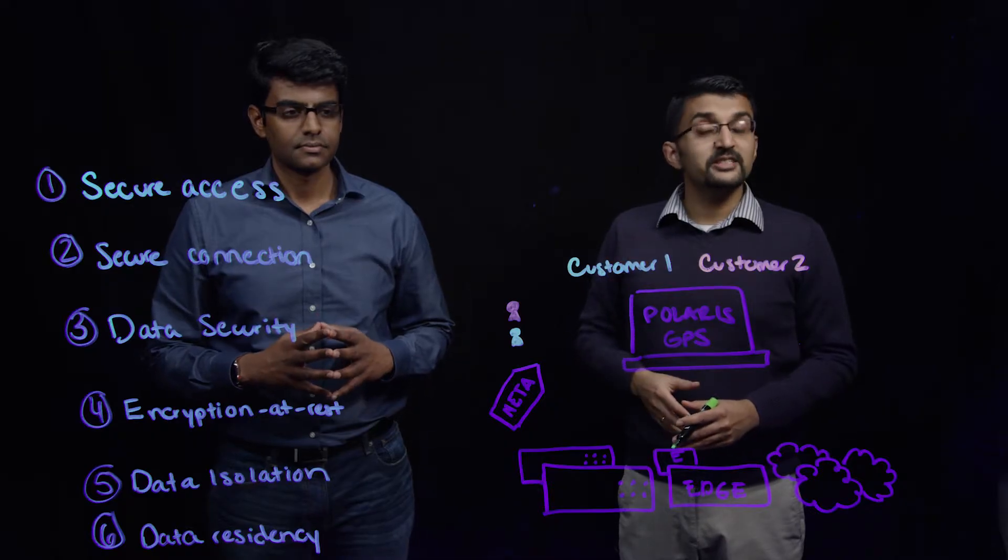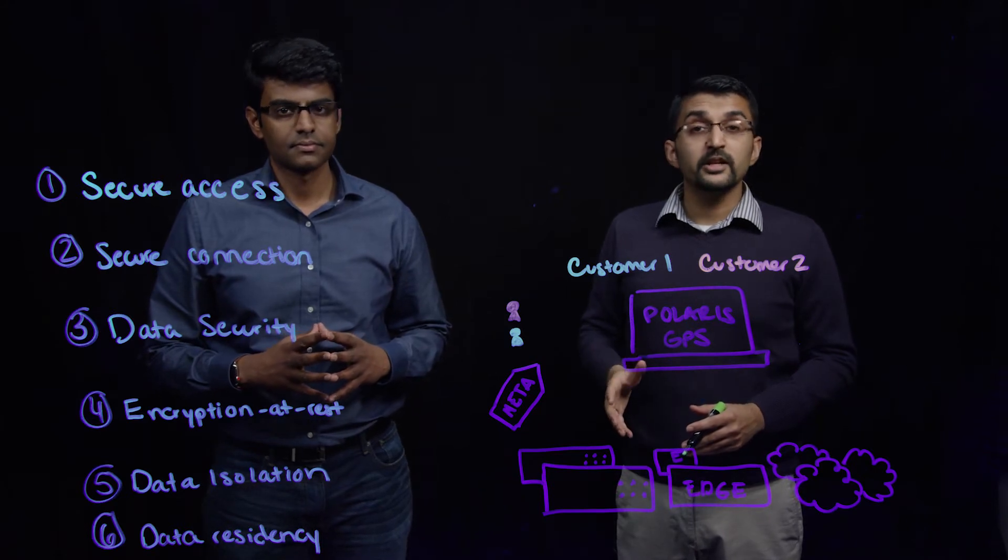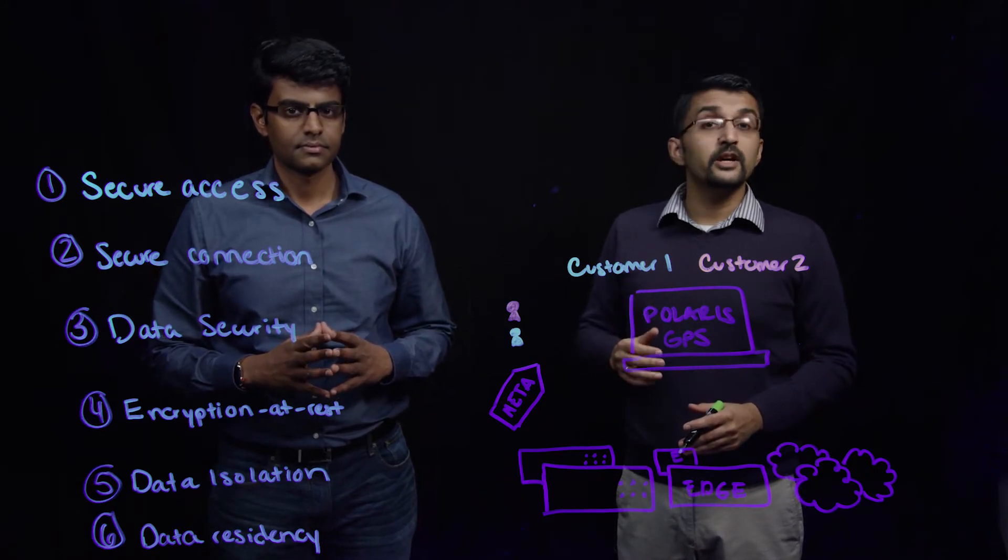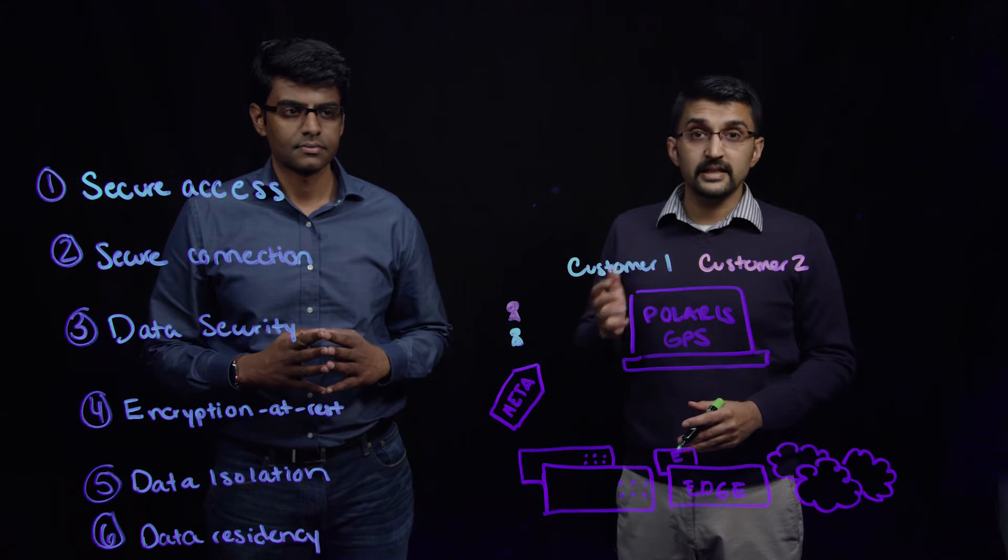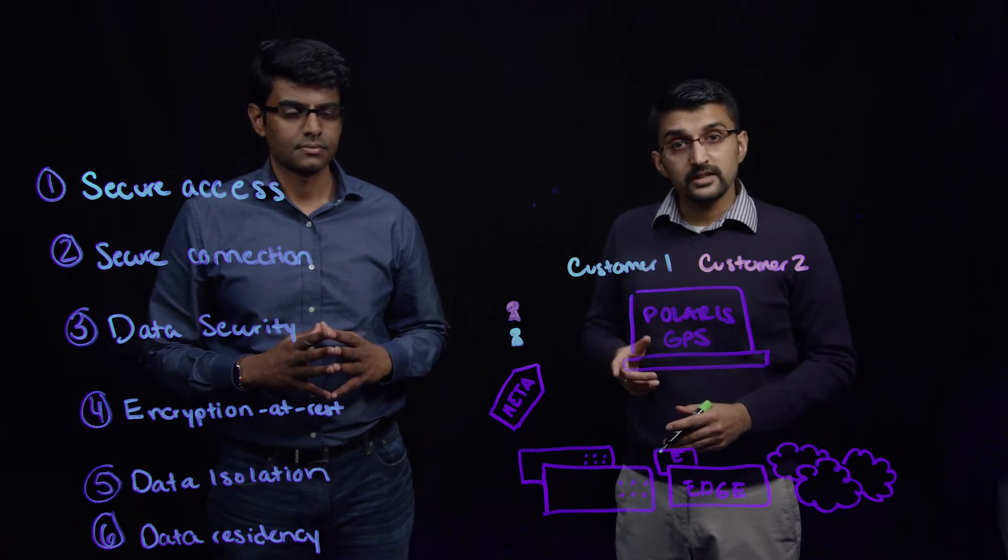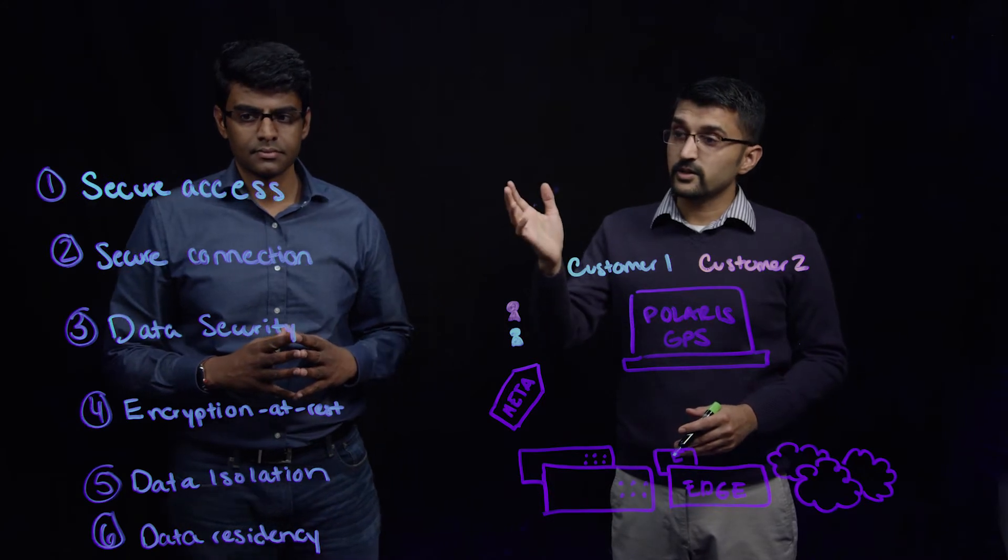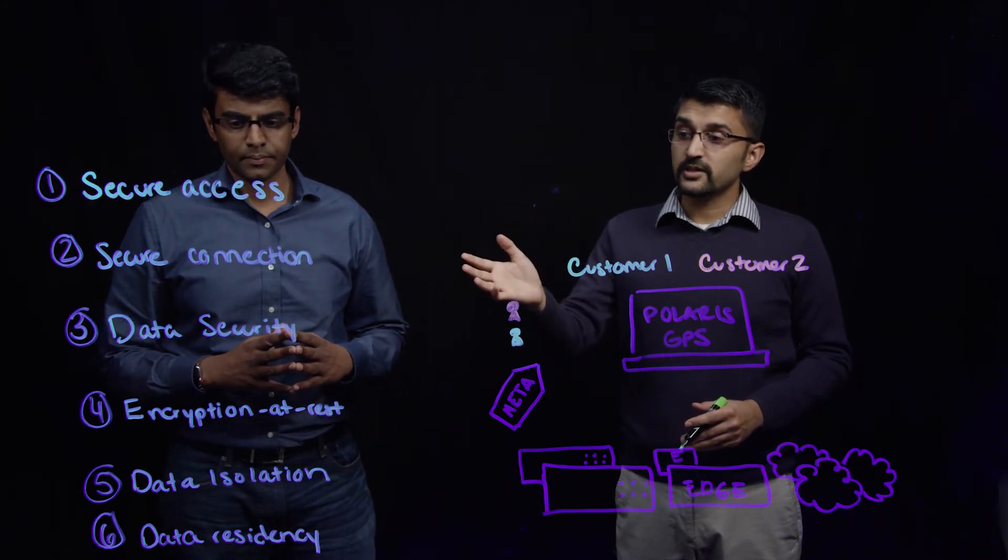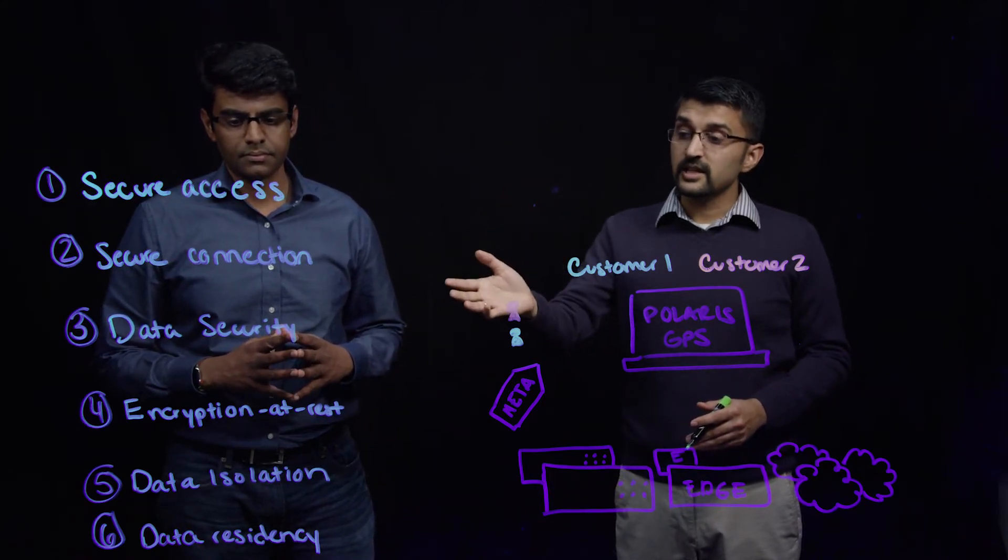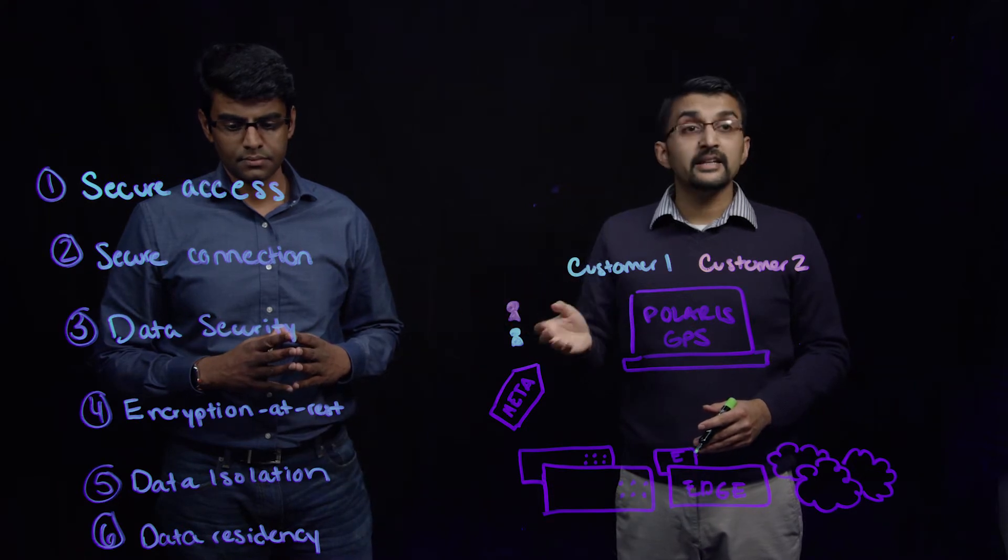Polaris GPS takes a multi-layered approach to security to ensure the privacy and safety of our customers' applications and data. This comprehensive security strategy includes secure access, secure connection, data security, encryption at rest, data isolation, and data residency.